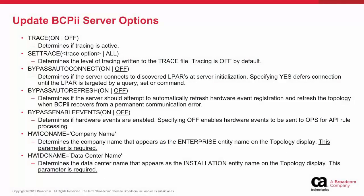BCPII Server options control server functionality. Some examples are Trace, which determines if tracing is active, and Set Trace, which determines the level of tracing written to the trace file. Tracing is off by default. Bypass Auto Connect determines if the server connects to discovered LPARs at server initialization. Specifying Yes defers connection until the LPAR is targeted by a query, set, or command.